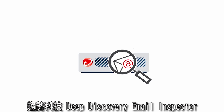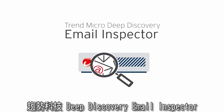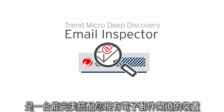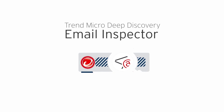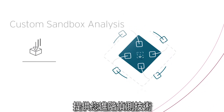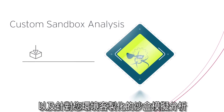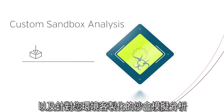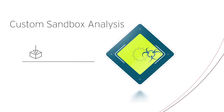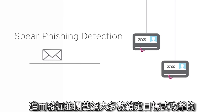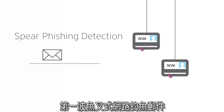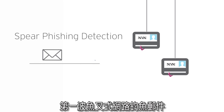Trend Micro Deep Discovery Email Inspector is a single appliance that seamlessly works with your existing secure email gateway, and provides advanced detection techniques as well as sandbox analysis customized to your own environment to identify and block the spear-phishing emails that are the initial phase of most targeted attacks.